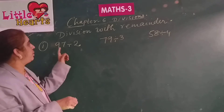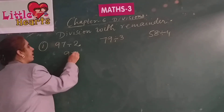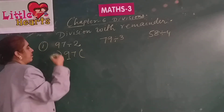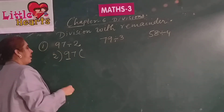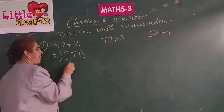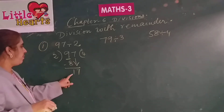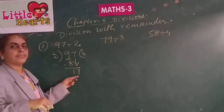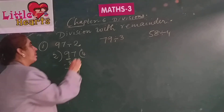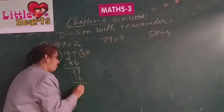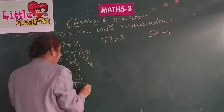Now let us go with divisions with remainder. Until now we have got only remainder 0; let us go with divisions that have a remainder. Take 97 divided by 2. As 9 is greater than 2, consider only 9. Read 2 table: 2 fours are 8; 9 minus 8 is 1. Bring down 7 to get 17. We don't get 17 in the 2 table, so go with the nearest smaller number: 2 eights are 16; 17 minus 16 is 1. So 48 is the quotient and 1 is the remainder.